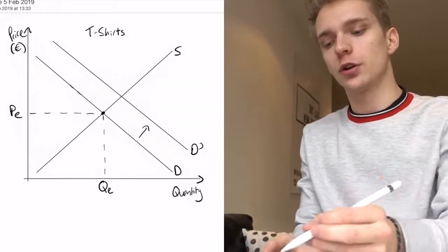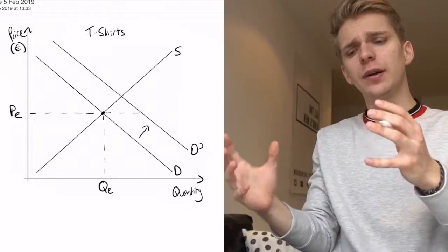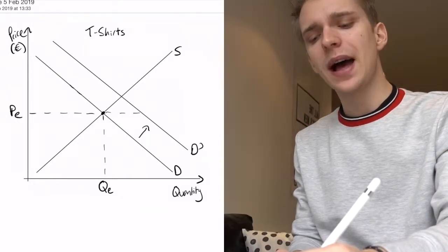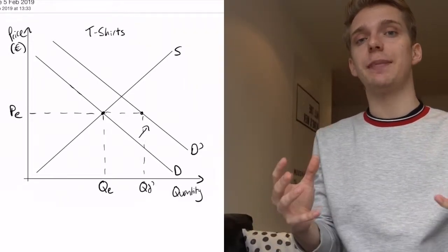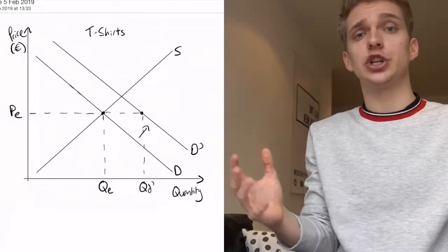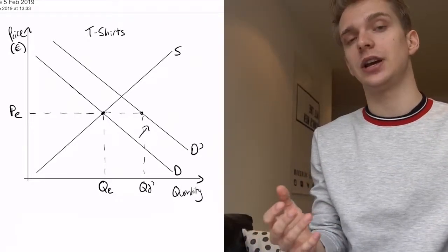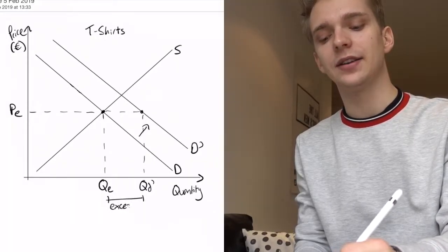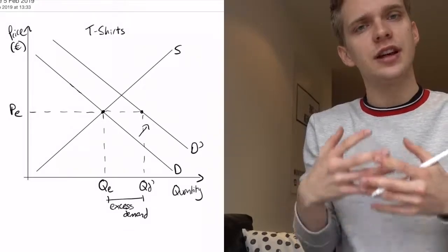When the demand curve shifts outwards, initially the price stays the same. We've got this new demand curve but the old equilibrium price. What can you notice? The new quantity demanded — QD prime — is all the way out here, whereas the supply of t-shirts is still at QE. The supply hasn't changed yet. T-shirts have become more fashionable, but producers haven't responded to that change yet. So in this situation, we have once again an excess demand for t-shirts — the demand has just increased but producers haven't started producing more t-shirts to fill that demand yet.